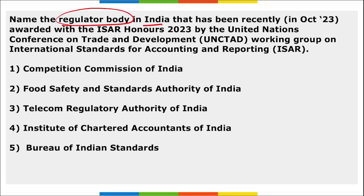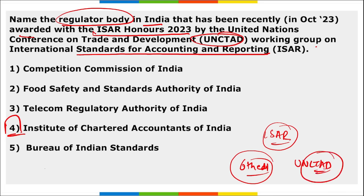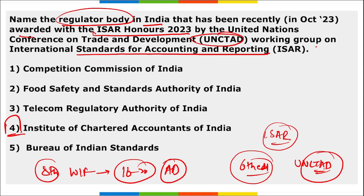Next, name the regulatory body in India recently awarded with ISAR Honors 2023 by UNCTAD's Working Group on International Standards for Accounting and Reporting. It is ICAI — Institute of Chartered Accountants of India — honored with the 6th edition of ISAR Honors 2023, presented by UNCTAD. This award was presented during the 8th World Investment Forum held from 16th to 20th October in Abu Dhabi. The theme was 'Investing in Sustainable Development.'